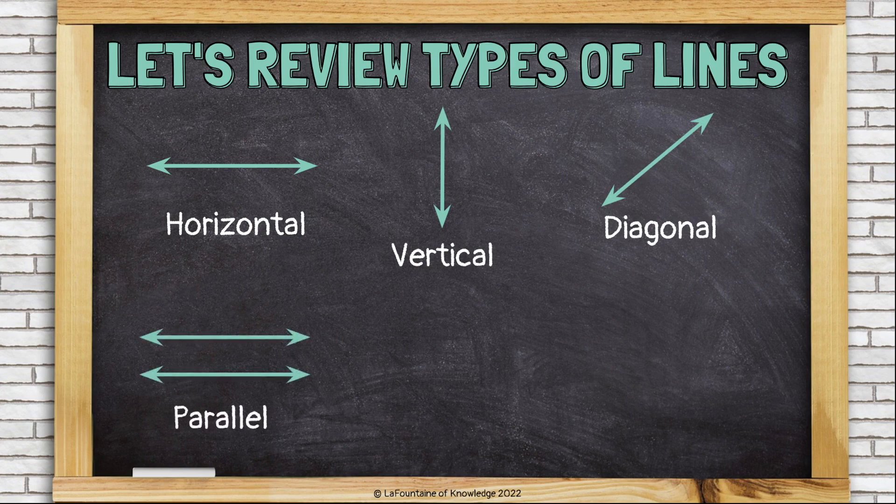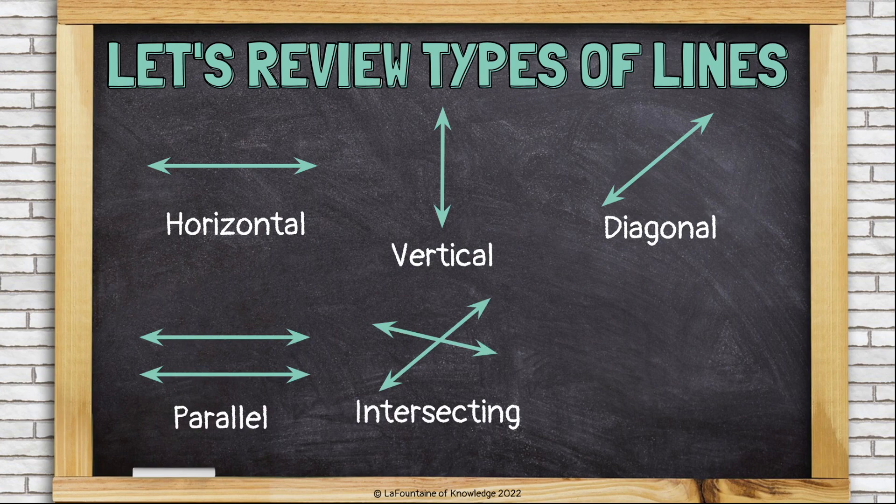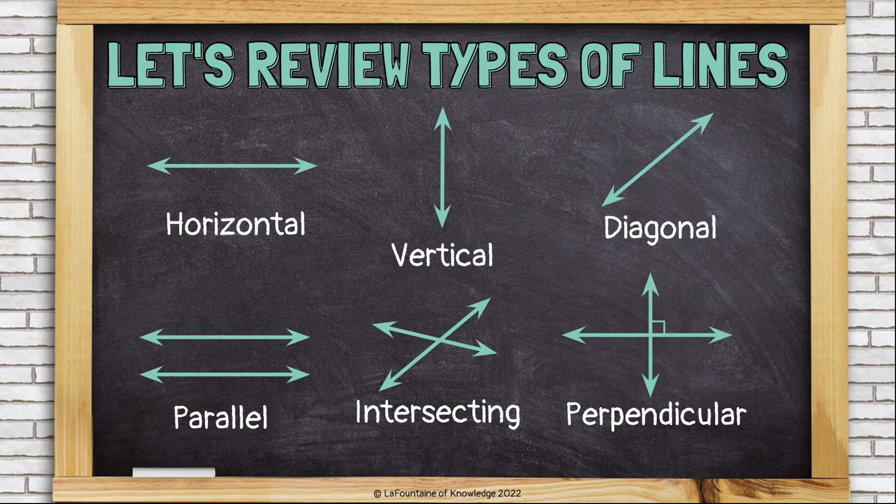Parallel lines run side by side and never cross. Intersecting lines are just lines that cross each other. And perpendicular lines are lines that cross or intersect at a right angle, a 90-degree angle.